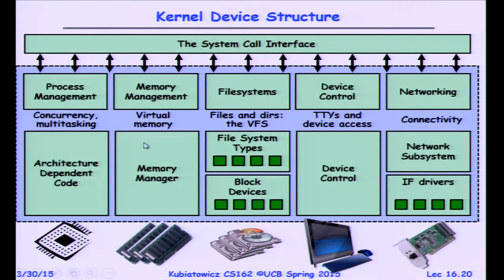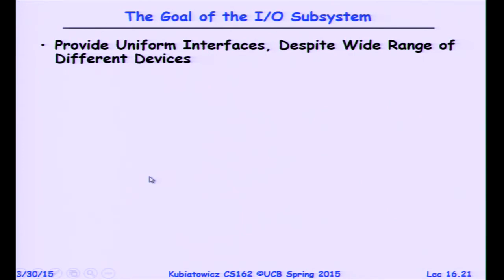One thing to note: up at the top half we're running at the thread or process level. Once we get down into the lower layers, a lot of this code is triggered by interrupts. We'll have to deal with that split between processes at one end and interrupts at the other.